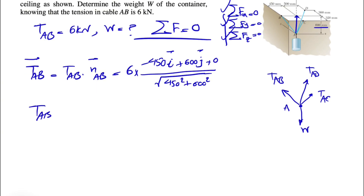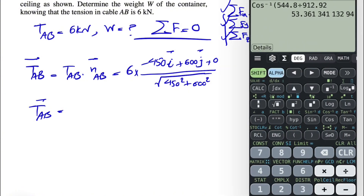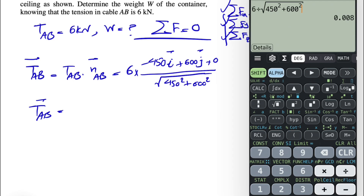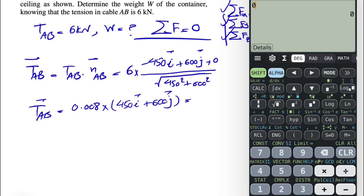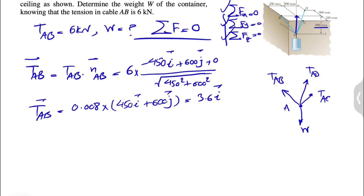To find TAB, we have 6 divided by the square root of 450 squared plus 600 squared, which gives a scalar of 0.008. Multiplying through: 0.008 times 450 gives 3.6i, and 0.008 times 600 gives 4.8j. So TAB equals -3.6i + 4.8j kilonewtons.